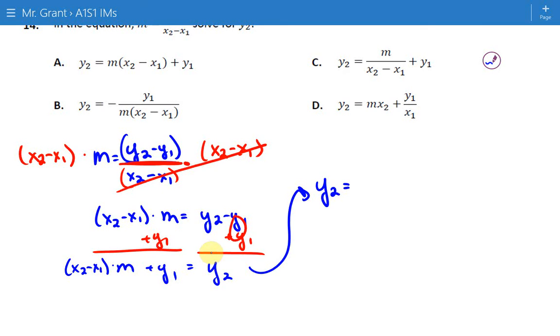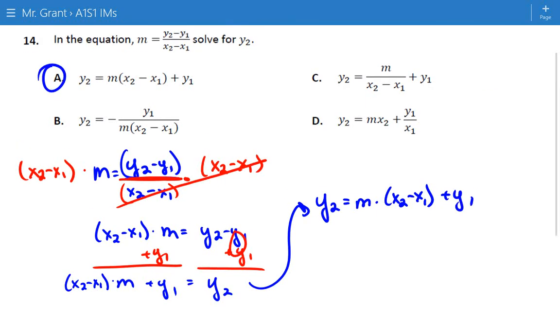They have the m that's in front of this on each of them. Well, we should do that here. We're allowed to move multiplication in any order, so instead of x2 minus x1 times m, we can do m times x2 minus x1, and then keep the y1 at the end, and you'll see that that matches A.